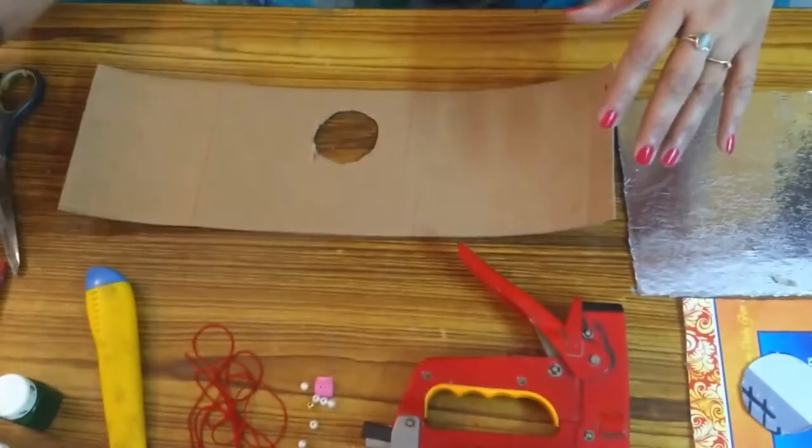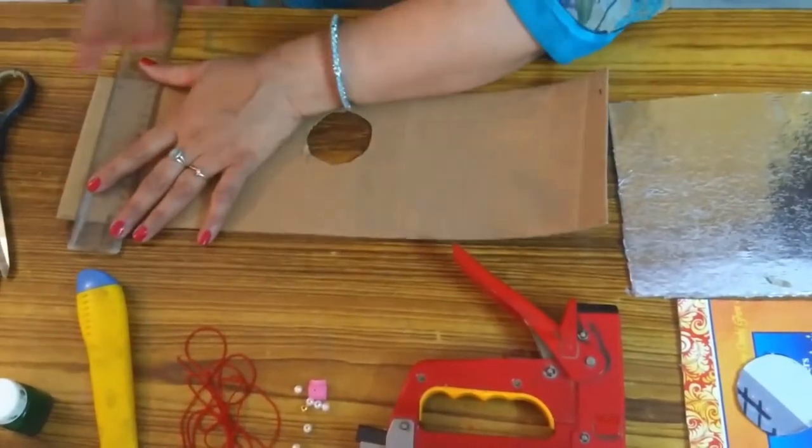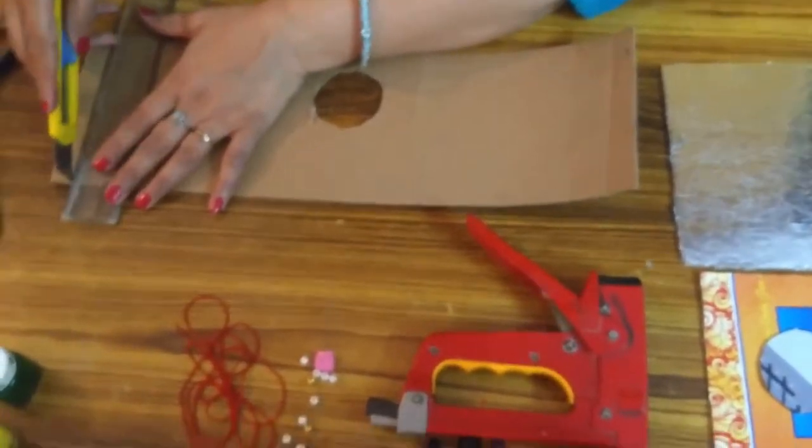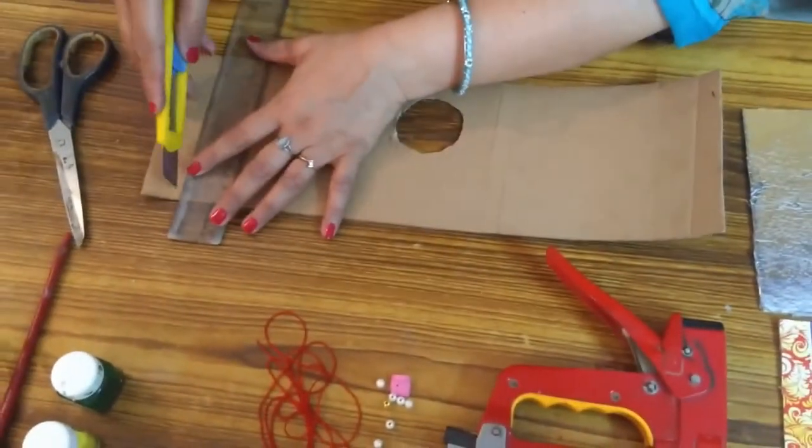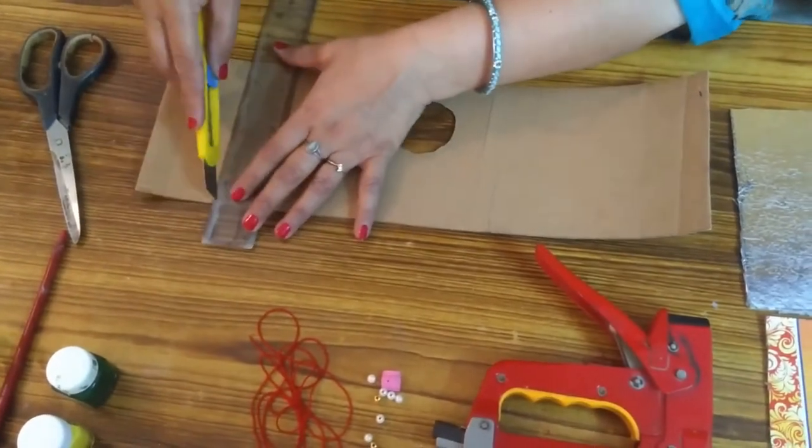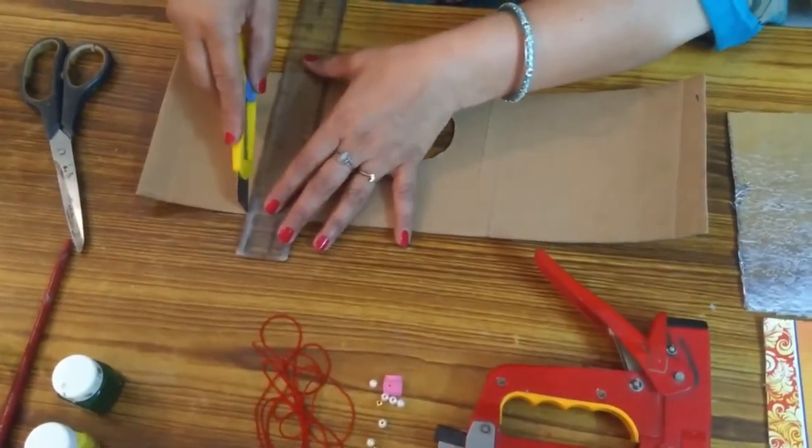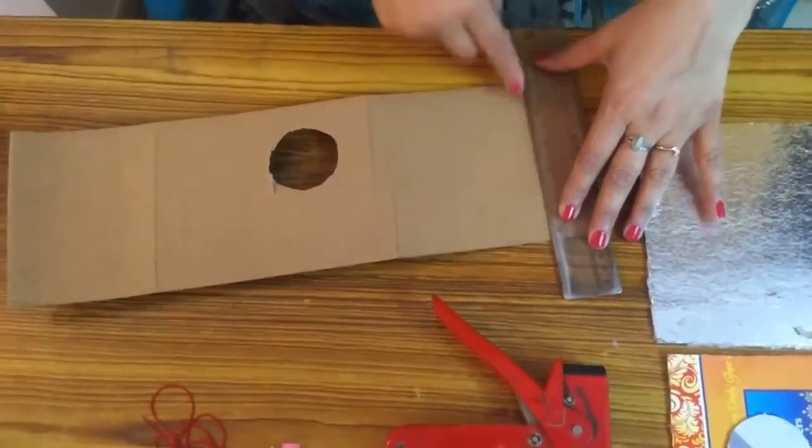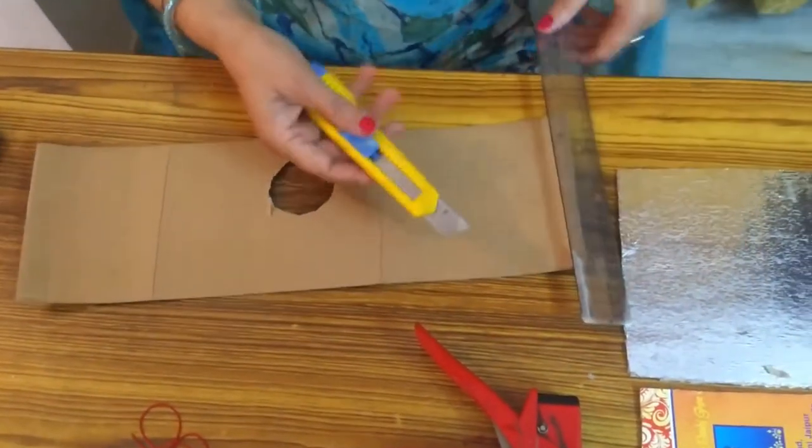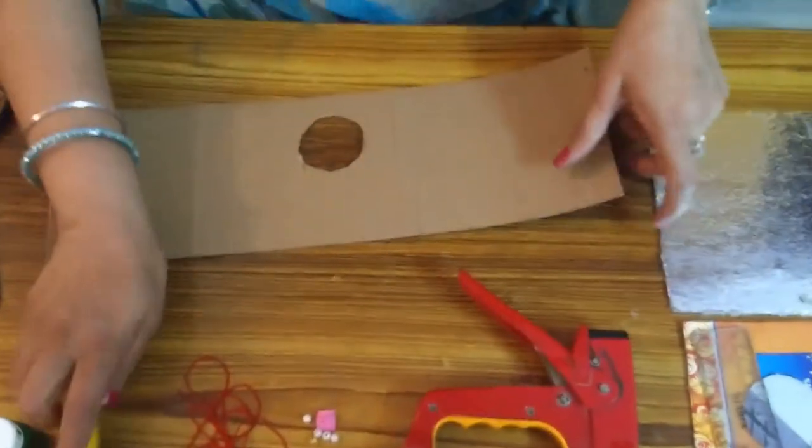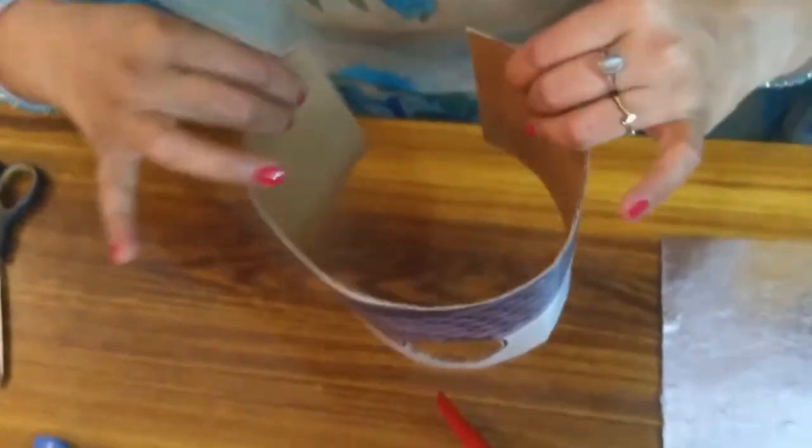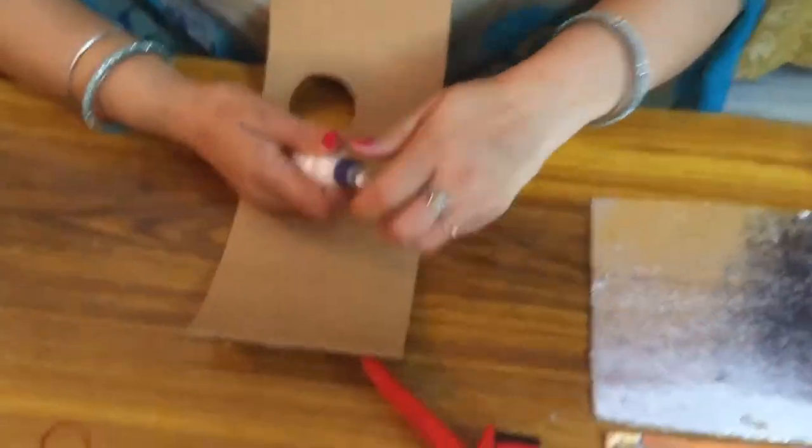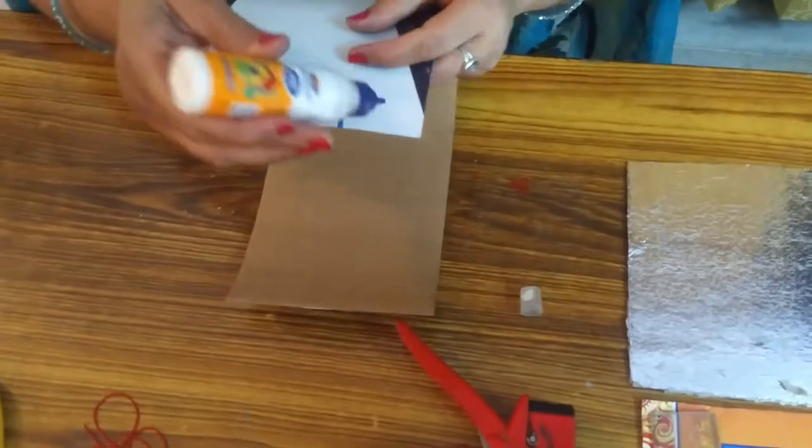Now we will mark cut lines on this cardboard with cutter so that we can fold our cardboard in the shape of cylinder, like this. Now just fold it. We can fold easily because of these cut lines and we will paste this with the fevicol.